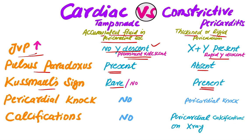Pericardial knock is present in constrictive pericarditis but there is no pericardial knock in cardiac tamponade. Pericardial knock is a distant third heart sound that is only present in constrictive pericarditis.